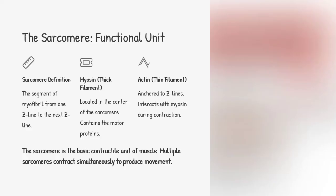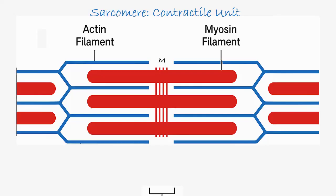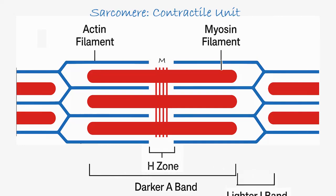Here comes the hero of muscle contraction — the sarcomere. It's the segment between two Z lines. Within this segment, you'll see thick filaments (myosin) placed centrally, and thin filaments (actin) anchored to the Z lines. When sarcomeres contract in unison, the whole muscle shortens and produces movement.